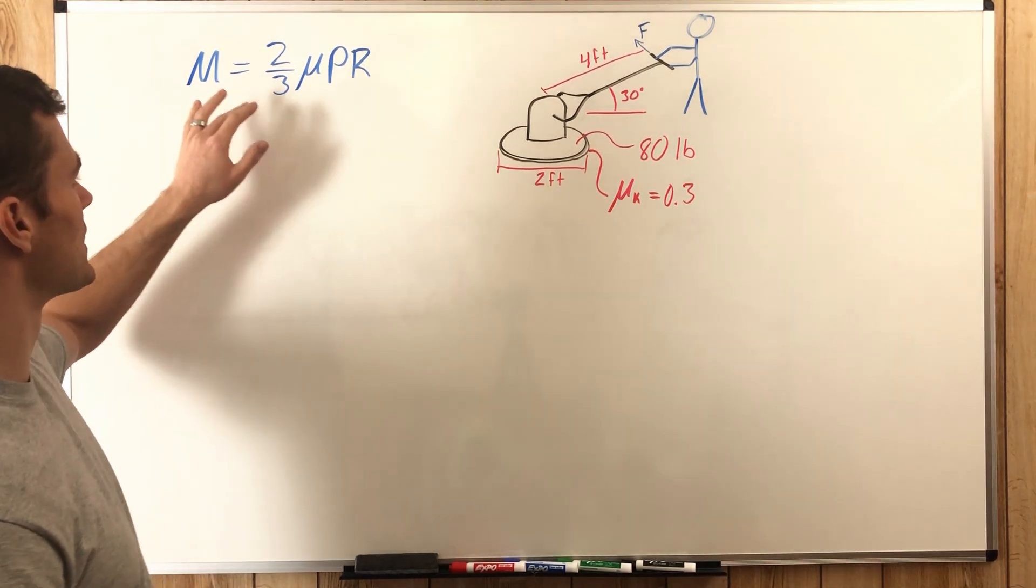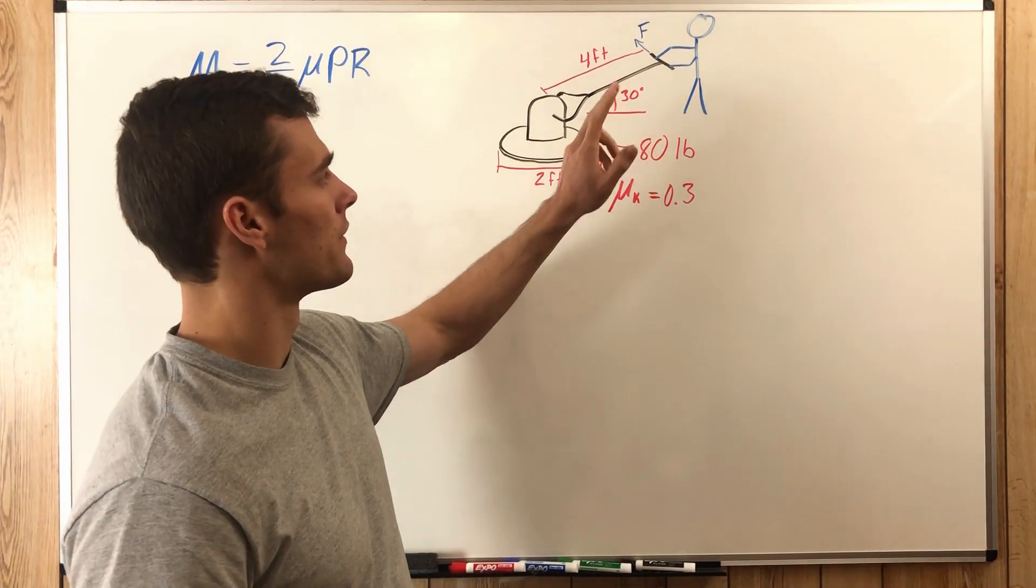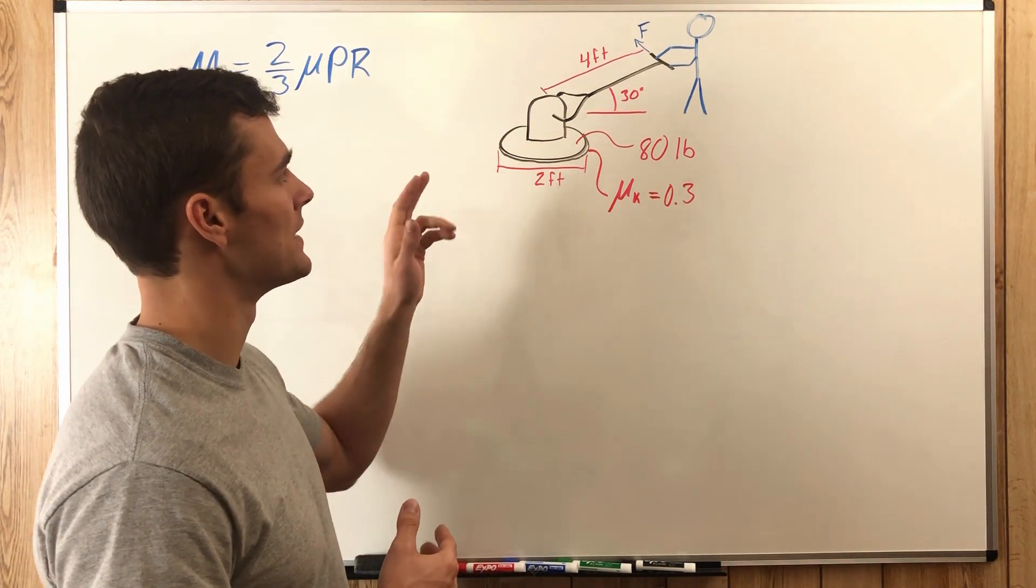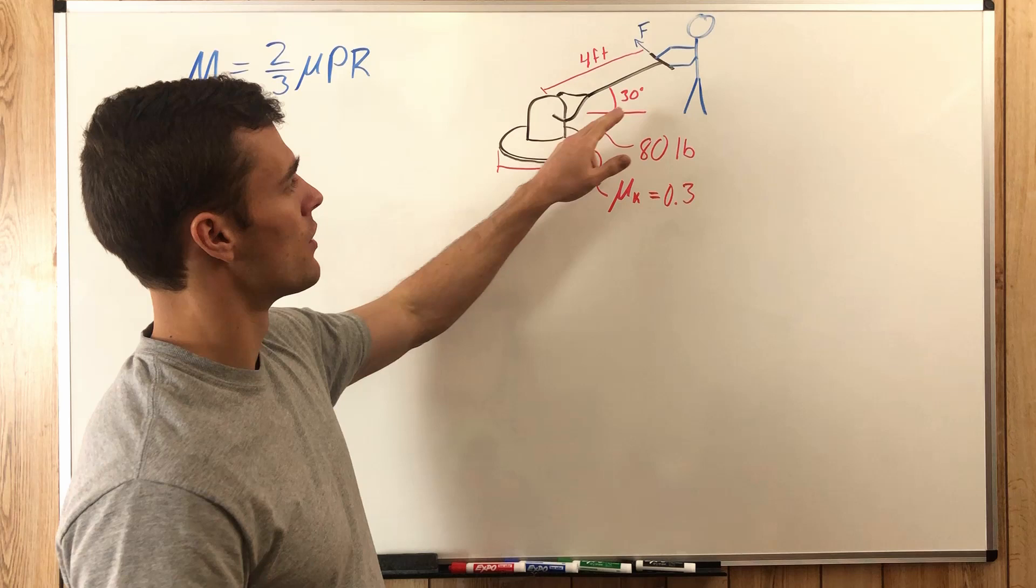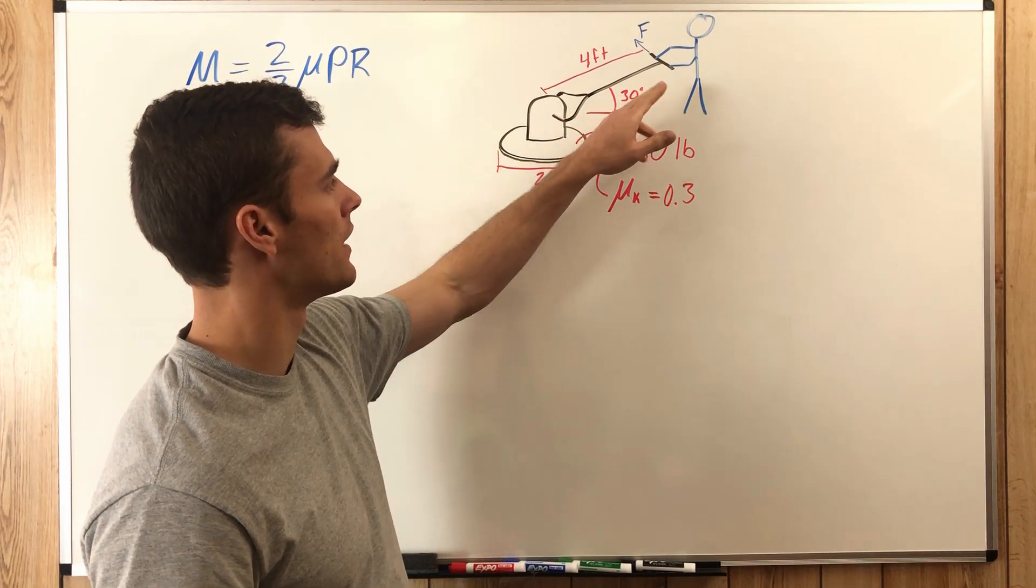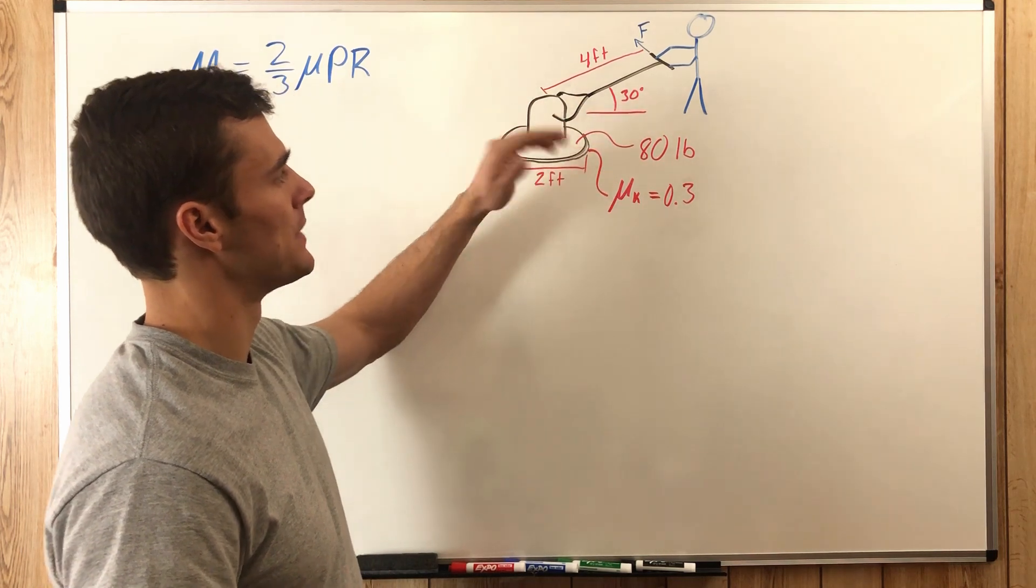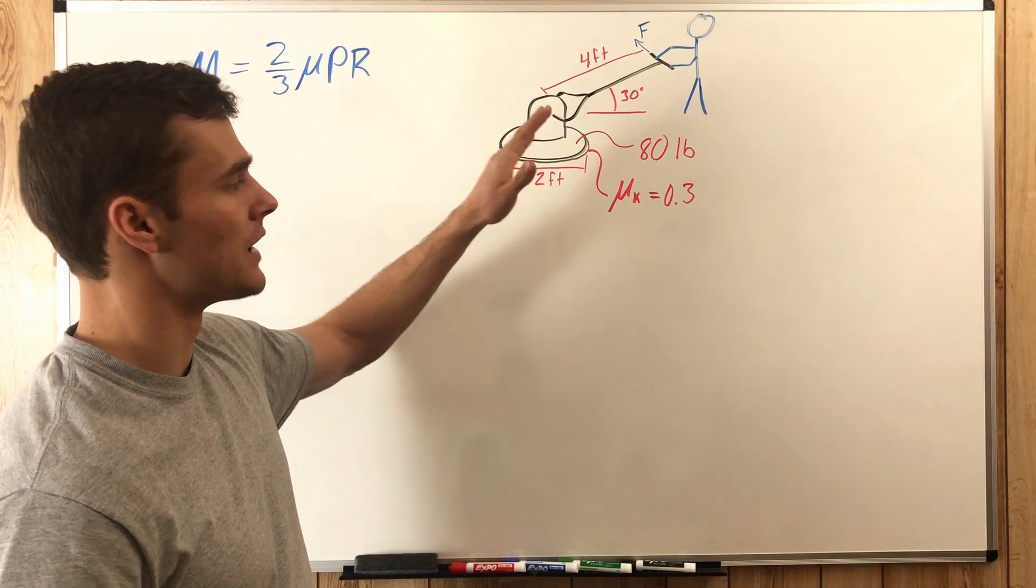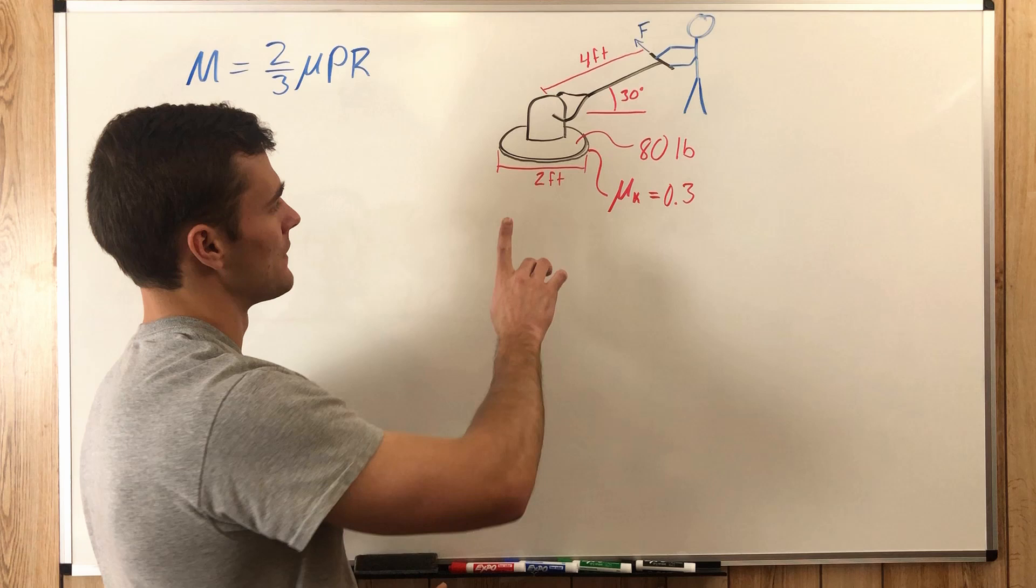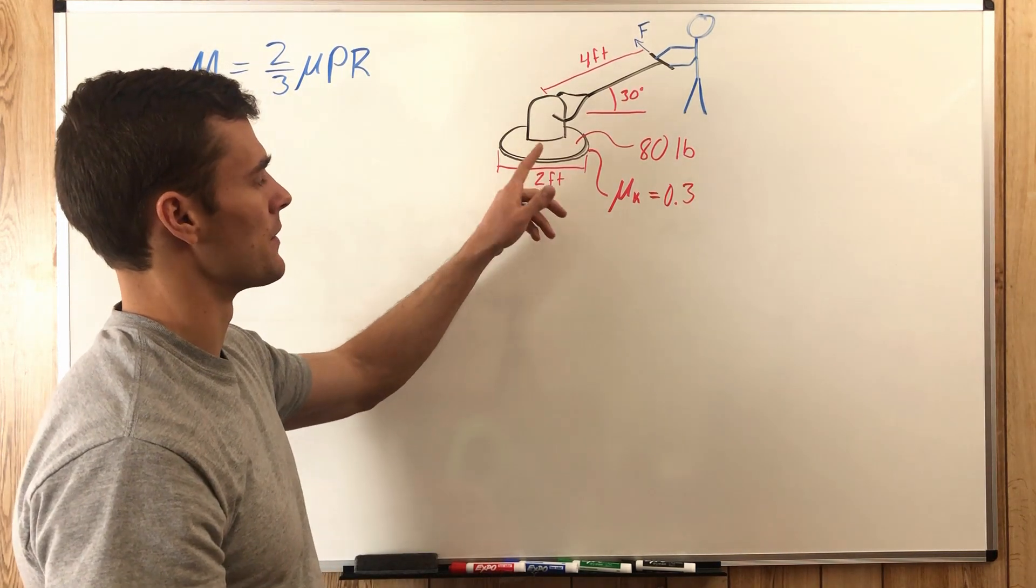Now this equation is solved for a moment, but we're trying to find the force. The moment is a force times a distance. We have our distance given in the length of the handle, and because it is tilted up at an angle we'll need to find the perpendicular distance from the axis of the moment from the machine.